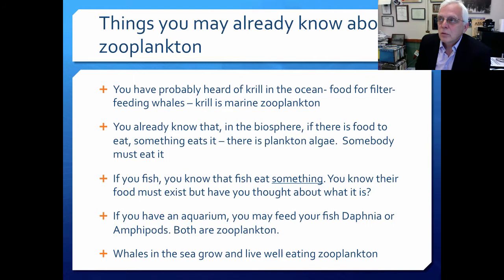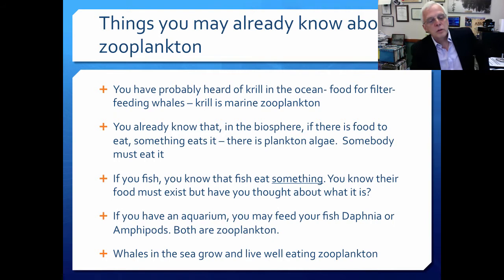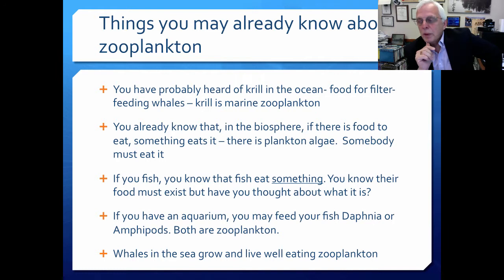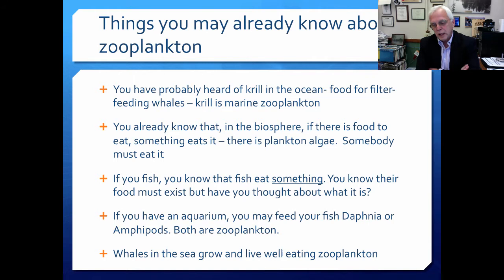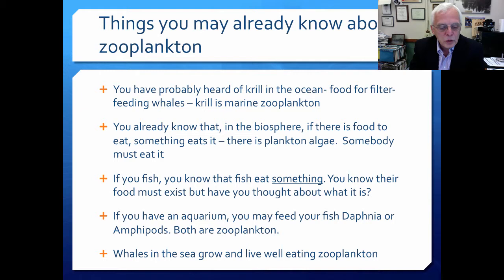You already may know that in the biosphere, if there is food to eat, something eats it. There is planktonic algae that we have just looked at in the previous session — somebody has got to eat it, and that has got to be some kind of planktonic organism, and therefore a zooplankton. If you fish, you know that fish eat something out there. A lot of it's zooplankton; some of it's benthos, but we'll get to that in session 15. If you have an aquarium, you may feed your fish daphnia or amphipods. Both of these can be zooplankton. You know that the zooplankton must be quite abundant because whales in the sea — very large organisms indeed — grow and live well eating zooplankton.